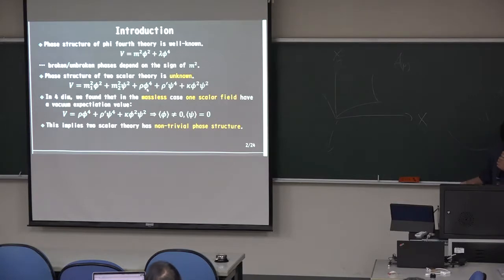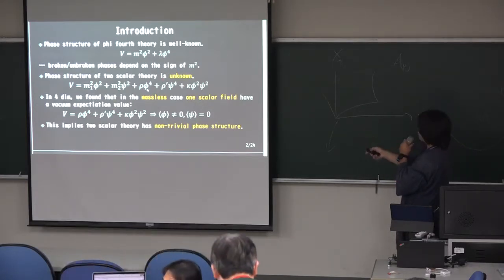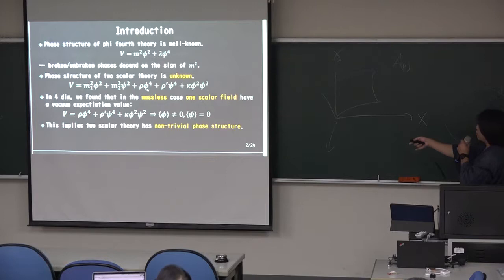Introduction. This structure of by-post theory is well known. Potential is given by this, and a broken and an unbroken base depends on the side of H square. So M square is positive, it is a broken base, and the M square is negative, it is a broken base. Right?